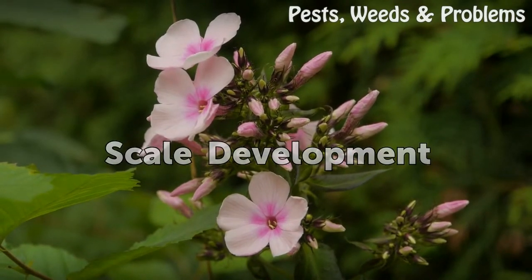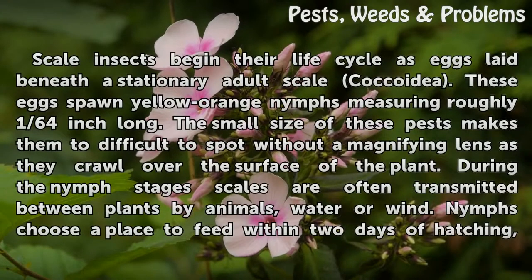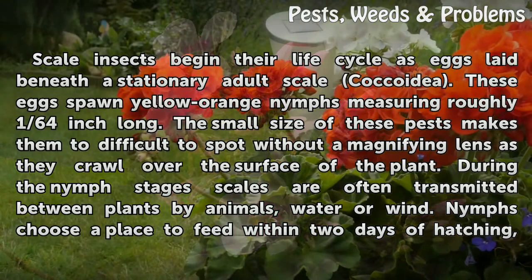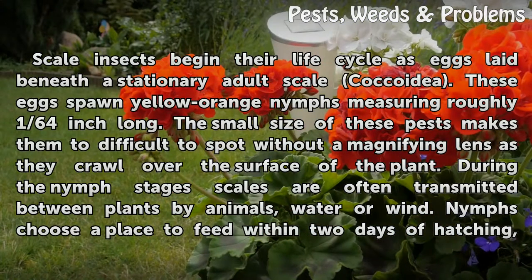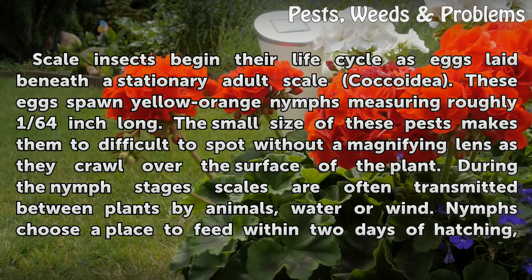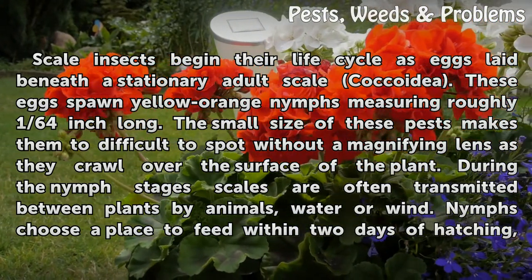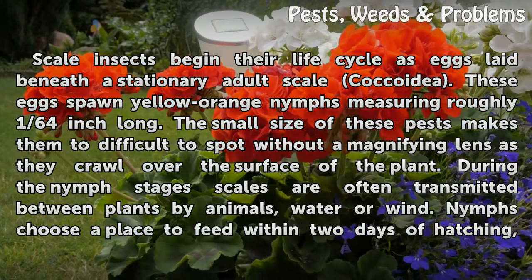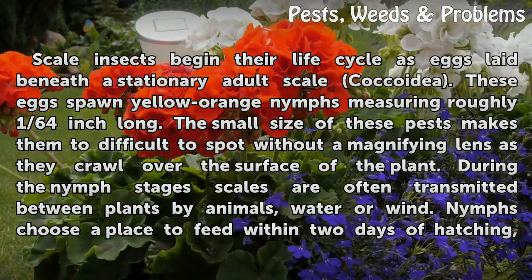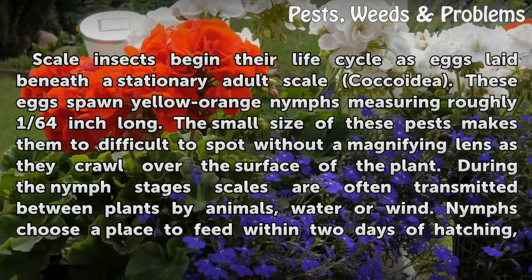Scale Development. Scale insects begin their life cycle as eggs laid beneath the stationary adult scale. These eggs spawn yellow-orange nymphs measuring roughly 1/64th of an inch long. The small size of these pests makes them difficult to spot without a magnifying lens as they crawl over the surface of the plant. During the nymph stages, scales are often transmitted between plants by animals, water, or wind.